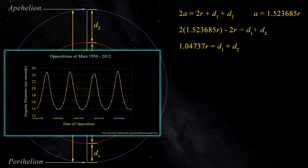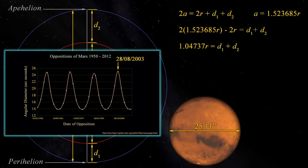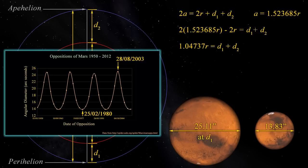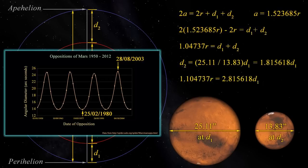We don't know either of those, so it's back to our graph of angular sizes of Mars at opposition, and the data behind it. The maximum diameter of 25.11 arcseconds is when Mars is at its closest to Earth. It's representative of Mars being at distance d1. The smallest angular diameter is 13.83 arcseconds, almost half the apparent size. It's representative of Mars being at distance d2. Although we don't know d1 and d2, there's a straightforward relationship between distance and an object's apparent size. Something twice as far away appears half the size. So we can work out the ratio between them. d2 is 25.11 over 13.83 times larger than d1. d2 then, is 1.815618 d1. Substituting into the previous formula, we find that 1.04737 r equals 2.815618 d1.